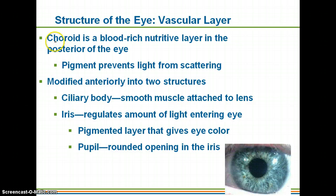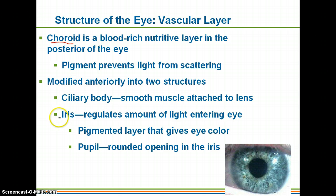The middle layer is the vascular layer, made up of the choroid, which is full of blood — hence the name. It also has pigment similar to melanin in your skin, which keeps light from scattering as it enters the eye. Towards the anterior portion of the eye it becomes two modified structures: the ciliary body, which is smooth muscle that attaches to the lens, and the iris, which regulates the amount of light entering the eye. The pupil itself is not an actual structure — it is just a space surrounded by the iris.